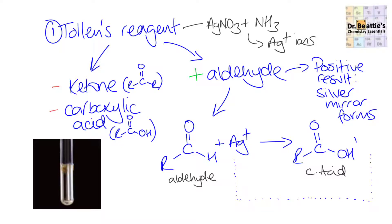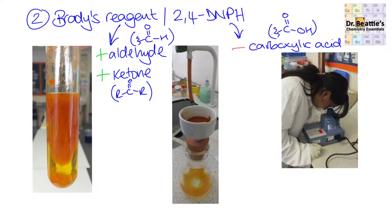For completeness: the silver+ ion is gaining electrons, so it's being reduced and forming silver metal — and this is exactly what gets deposited on the inside of your test tube when you're doing this test.